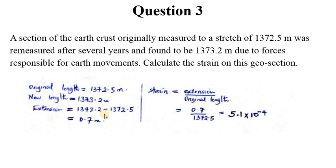Strain is actually extension over the original length, so we simply divide 0.7 over what we had as 1372.5 and that will give us 5.1 × 10⁻⁴. We don't have units because this is a ratio.